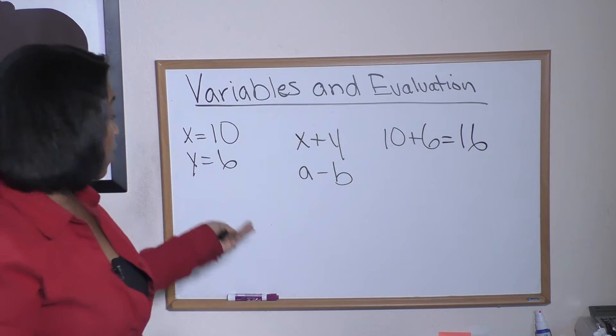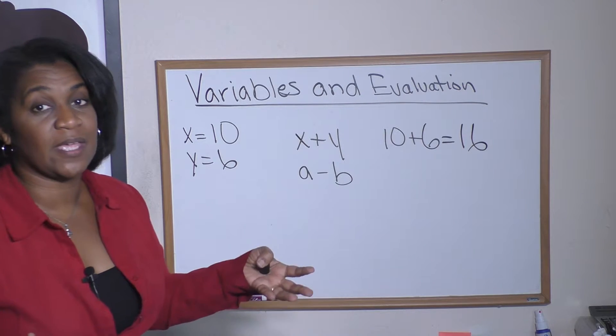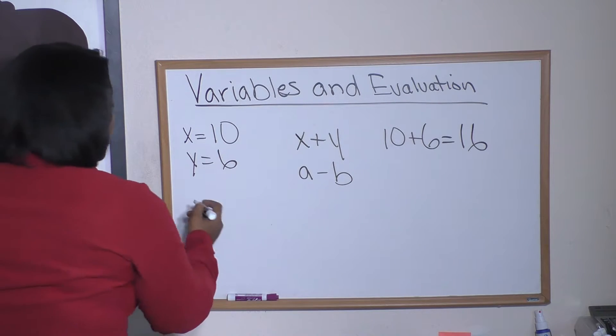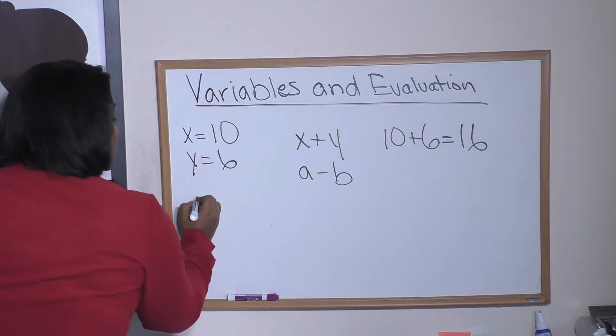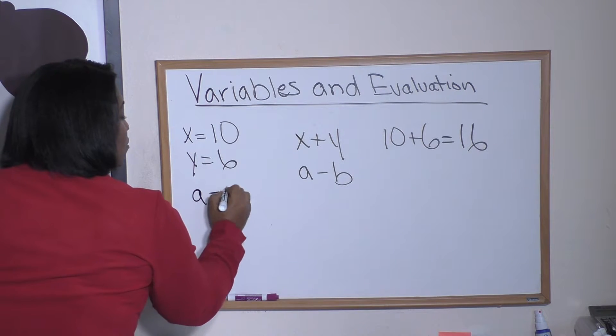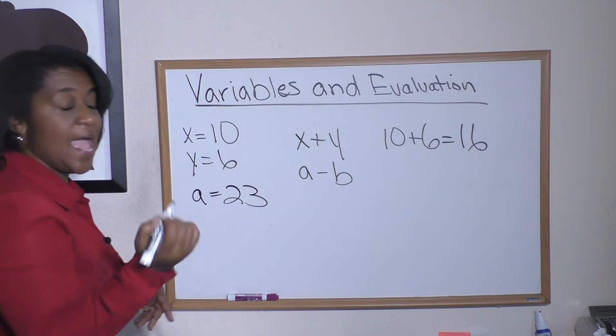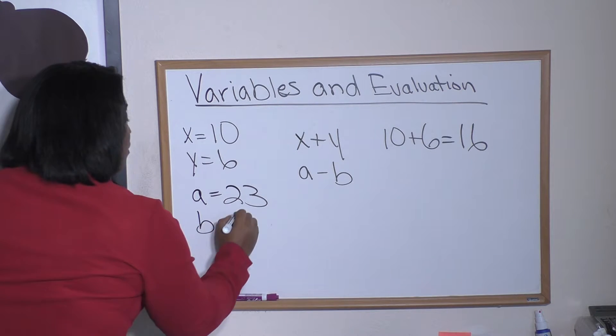Let's try it again, and this time we're going to give A and B some numbers to plug in. So we're going to do A equals 23 and B equals 14.